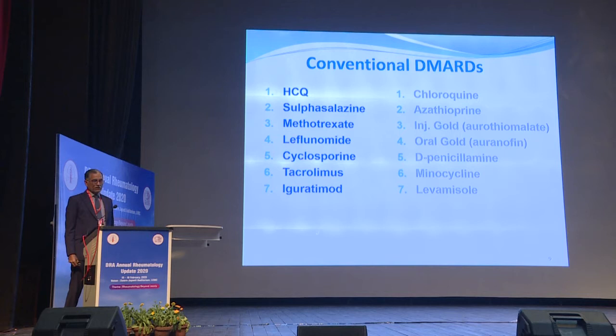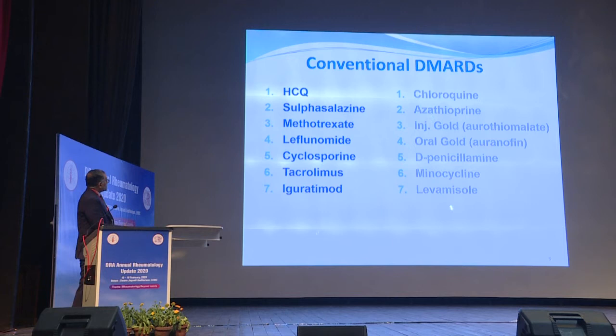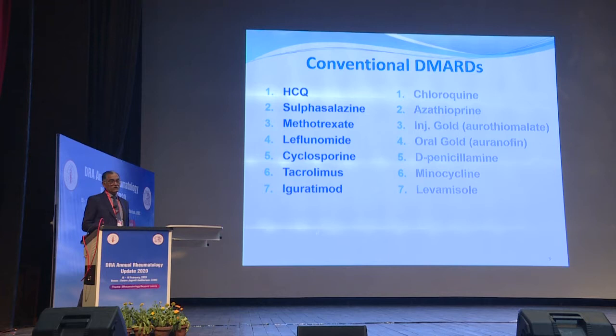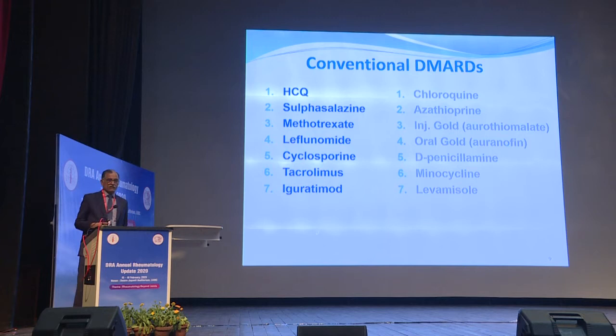Moving on to conventional disease-modifying anti-rheumatic drugs: over the years we have obtained a long list. Drugs like D-penicillamine and oral or injectable gold, used strongly in the 1980s, are now almost outmoded — they have fallen by the wayside because of an unacceptable toxicity pattern. Literally speaking, it is the top four drugs in the list which are the commonly used conventional disease-modifying drugs today.